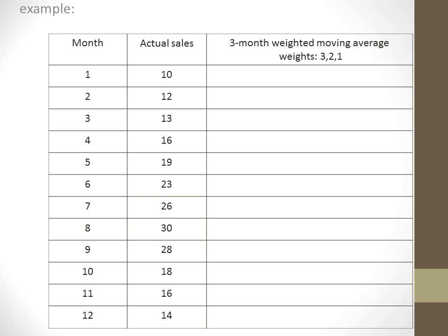To forecast the demand of month 4, we will apply the formula in the previous slide. As you see, we will take the summation of the sales in the previous months multiplied by its weights over the summation of the weights. Then we will get the value 12.16, which represents the forecasted demand for month 4.